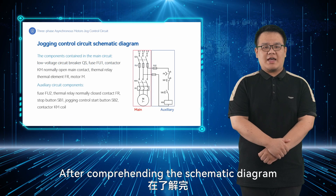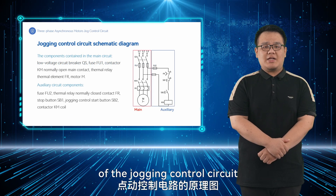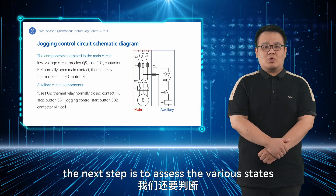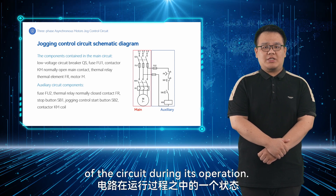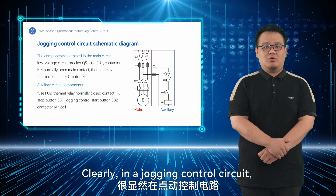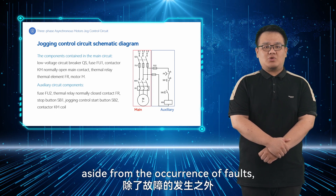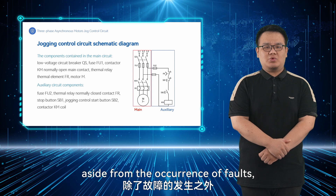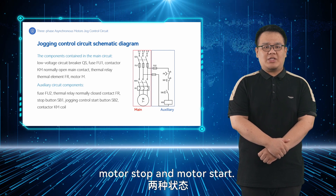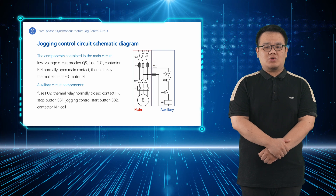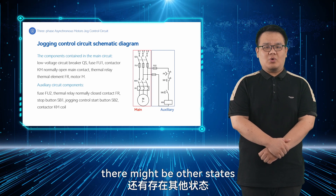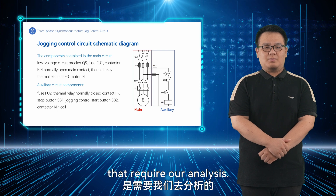After comprehending the schematic diagram of the jogging control circuit and its components, the next step is to assess the various states of the circuit during its operation. In a jogging control circuit, aside from the occurrence of faults, there are only two primary states: motor stop and motor start. However, in more complex circuits, there might be other states that require analysis.